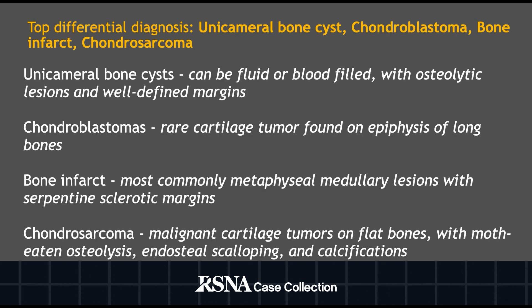There were several differential diagnoses including unicameral bone cyst, chondroblastoma, bone infarct, and chondrosarcoma. However, each of these diagnoses has their own unique presentation not found in this patient. Unicameral bone cysts can be fluid or blood-filled and often present with osteolytic lesions and well-defined margins. Chondroblastomas are a rare cartilage tumor found on the epiphysis of long bones. Bone infarcts, also known as osteonecrosis, are most commonly metaphyseal-medullary lesions with serpentine sclerotic margins. Chondrosarcoma is a malignant cartilage tumor found on flat bones with moth-eaten osteolysis, endosteal scalloping, and calcifications.